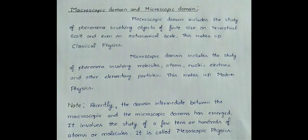Macroscopic domain includes the study of phenomena involving objects of finite size on a terrestrial scale and even on an astronomical scale. This makes up classical physics. In simple terms, we can say that macroscopic domain includes phenomena at large scales.